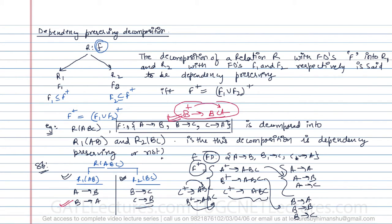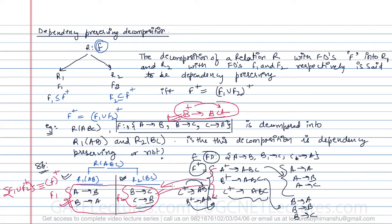For the decomposition to be dependency preserving, if F1 represents the FDs of R1 and F2 the FDs of R2, then (F1 union F2) closure must be equivalent to F closure. Combining them, everything present in F closure must be present in (F1 union F2) closure. In this case, the decomposition is clearly dependency preserving because it covers all the original relationships and the functional dependencies are equivalent.